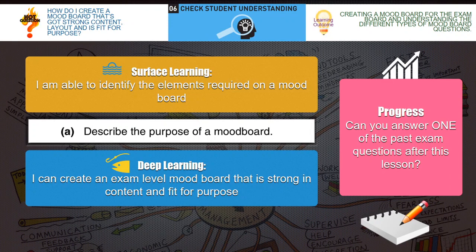So far we've looked at how to identify the elements required on a mood board and described the purpose of a mood board — to allow us to visually generate ideas. Our deep learning outcome is: I can create an exam-level mood board that is strong in content and fit for purpose. So that's the next thing — you can have a go at actually creating your own mood board, remembering the modelling tasks we've just done.